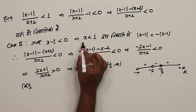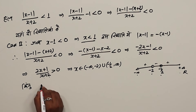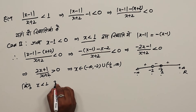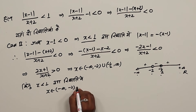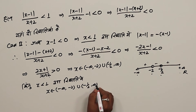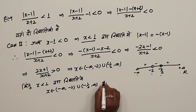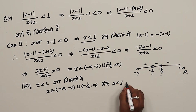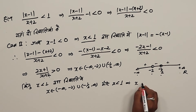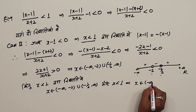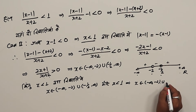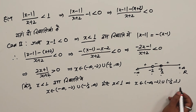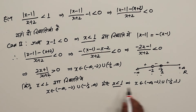संख्या रेखा पर minus 2 और minus 1/2 तीन भागों में विभक्त करती है। धनात्मक मान की शर्त पर x ∈ (−∞, −2) ∪ (−1/2, +∞)। x is less than 1 की शर्त के साथ intersection लेने पर अंतिम हल: x ∈ (−∞, −2) ∪ (−1/2, 1) प्राप्त होता है।